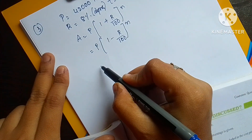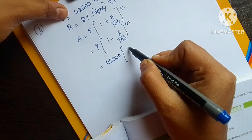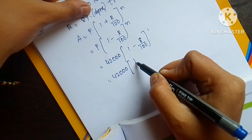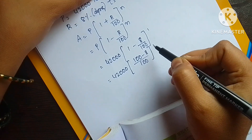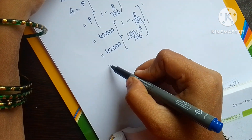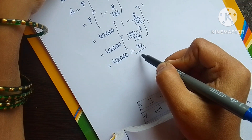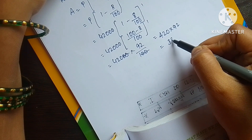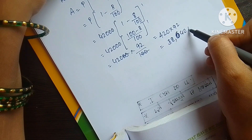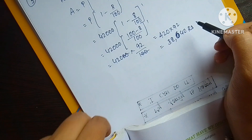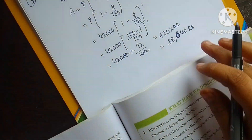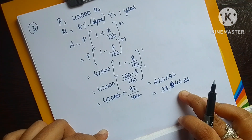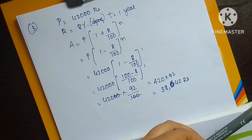So: P = ₹42,000, R = 8%, N = 1 year. Amount = 42,000 into (1 − 8/100)^1 = 42,000 into (92/100). Cancelling two zeros: 420 into 92 = ₹38,640. The value has decreased from ₹42,000 to ₹38,640 after one year. Thank you.